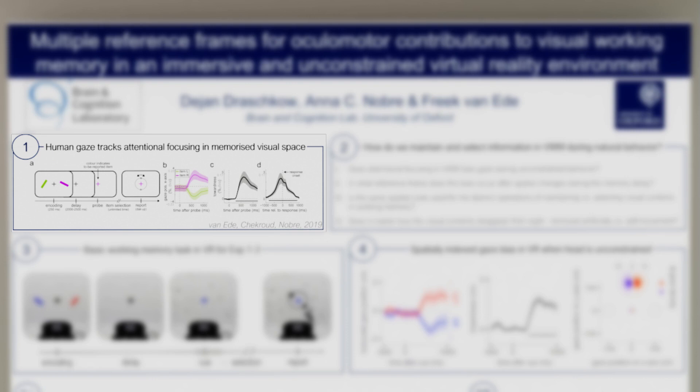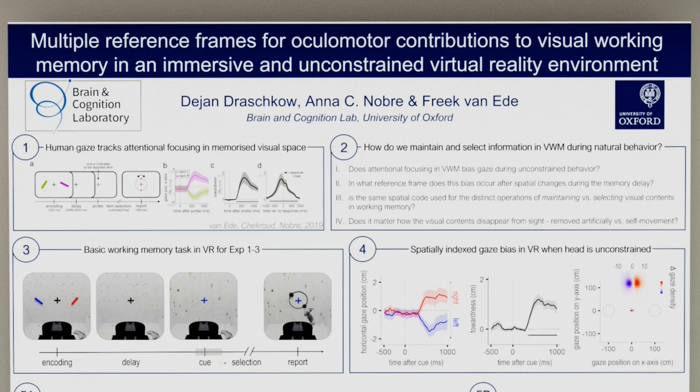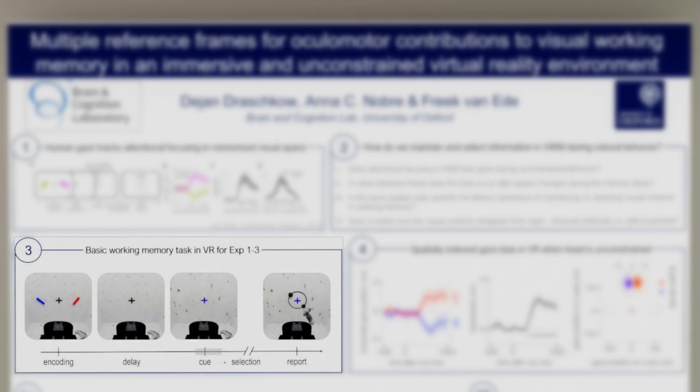As a proof of concept, we first wanted to demonstrate that such a gaze bias could be measured when selecting visual contents in working memory in virtual reality. Participants viewed two colored tilted bars that appeared briefly against one of four walls and reproduced the orientation of one bar after working memory delay. As you can see here.